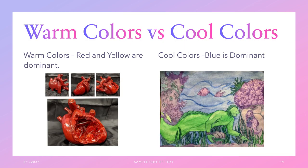Warm colors are colors in which red and yellow are dominant — so red, yellow, and orange. Cool colors have a blue dominant tone, such as purple, green, and blue.